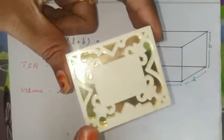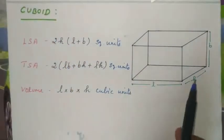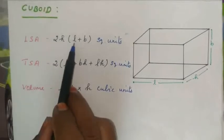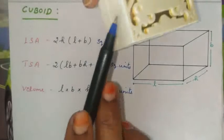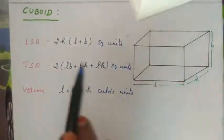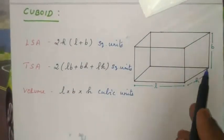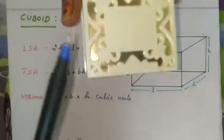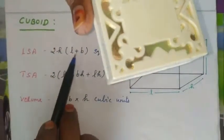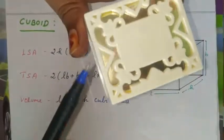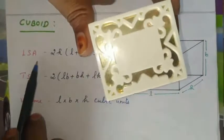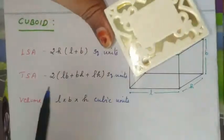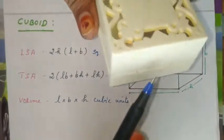Now let's look at the cuboid shape. The cuboid has length, breadth, and height. The LSA formula is 2H into (L + B), where L is length and B is breadth. This gives us the lateral surface area of the cuboid.